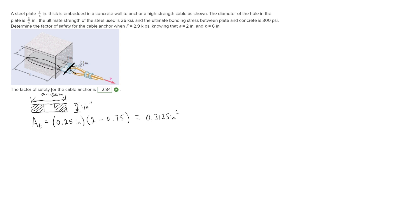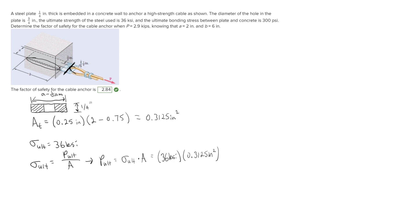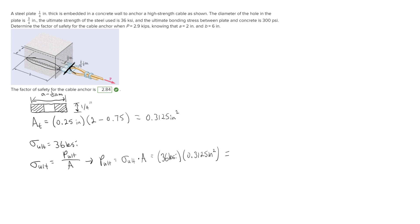Now that we have the area in tension, we also know the ultimate strength of the steel is 36 ksi. Using these two things we can find P ultimate. The ultimate strength formula is equal to P ultimate over A, so rearranging gives P ultimate equal to the ultimate strength times A. That is 36 ksi times 0.3125 inches squared, giving us a P ultimate of 11.25 kips.